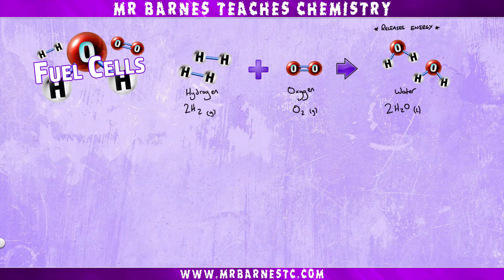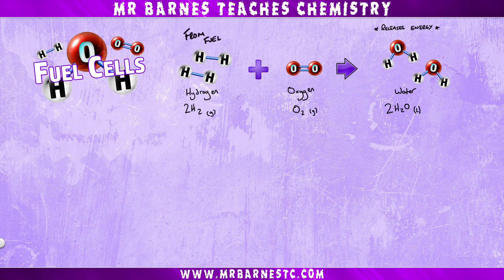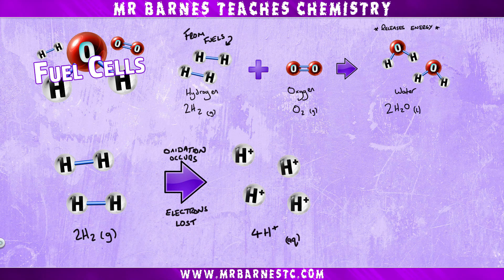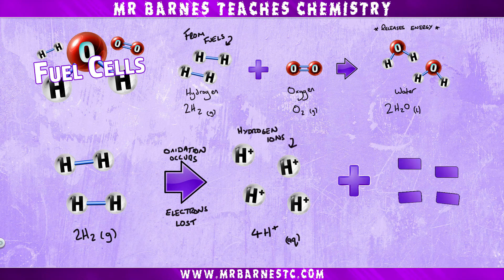Now there are two steps to this which you need to know if you're doing the higher paper. The first is your hydrogen H2, which we get from our fossil fuels, is oxidized — so it loses electrons — and turns into hydrogen ions, which are H+ ions, and it leaves you with four electrons spare.